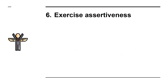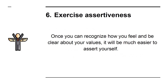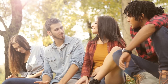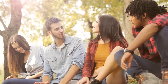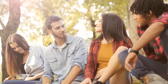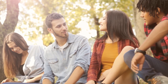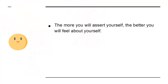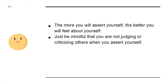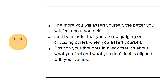6. Exercise assertiveness. Once you can recognize how you feel and be clear about your values, it will be much easier to assert yourself. For example, if you are with a group of friends and one suggests something you are uncomfortable about, you can assert yourself. Express how you feel and why you don't feel like participating in that idea. The more you will assert yourself, the better you will feel about yourself. Just be mindful that you are not judging or criticizing others when you assert yourself. Position your thoughts in a way that it is about what you feel and what you don't feel is aligned with your values.